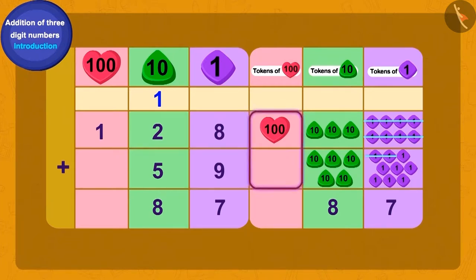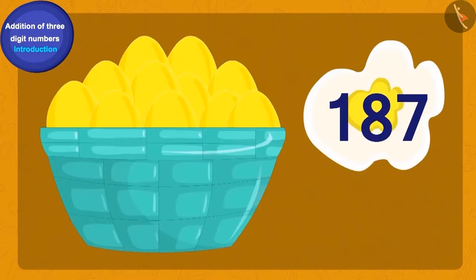Now what shall we do in the end? Yes, we would write 1 as the total number of tokens of 100. Oh wow! Baban now had a total of 187 gold eggs.